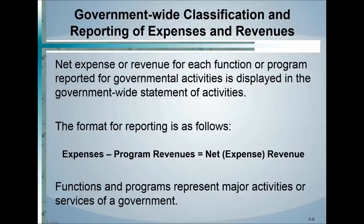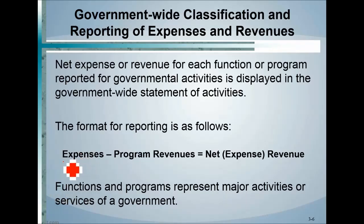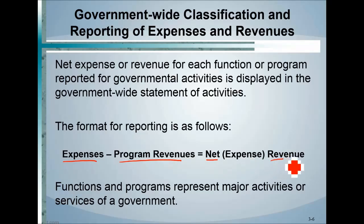This is a modified accounting equation. The net expense or revenue for each function or program reported for governmental activities is displayed in the government-wide statement of activities. The format is: expenses minus program revenues equals net expenses or net revenue. The functions and programs represent major activities and services of the government.